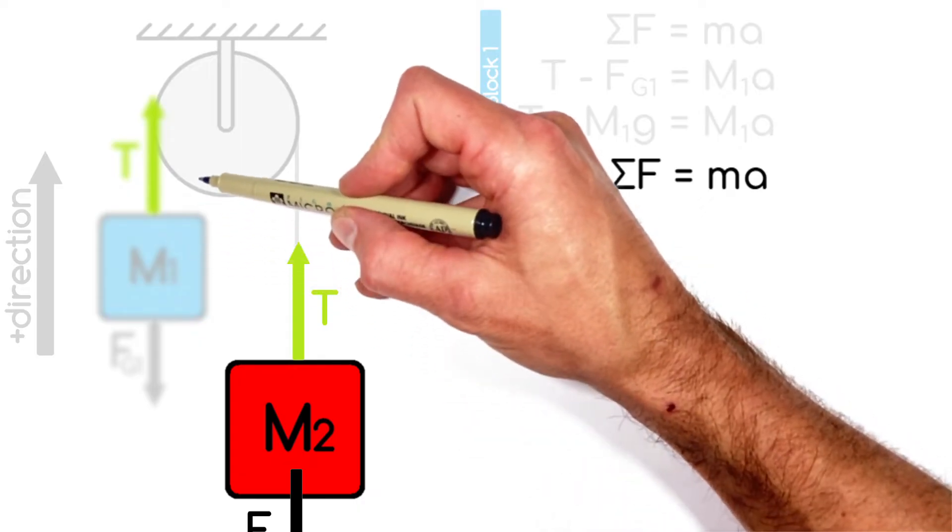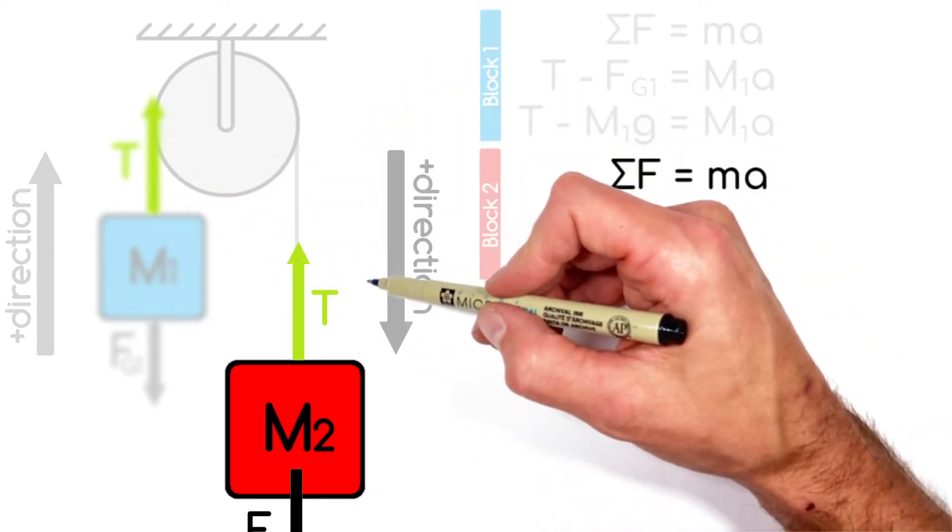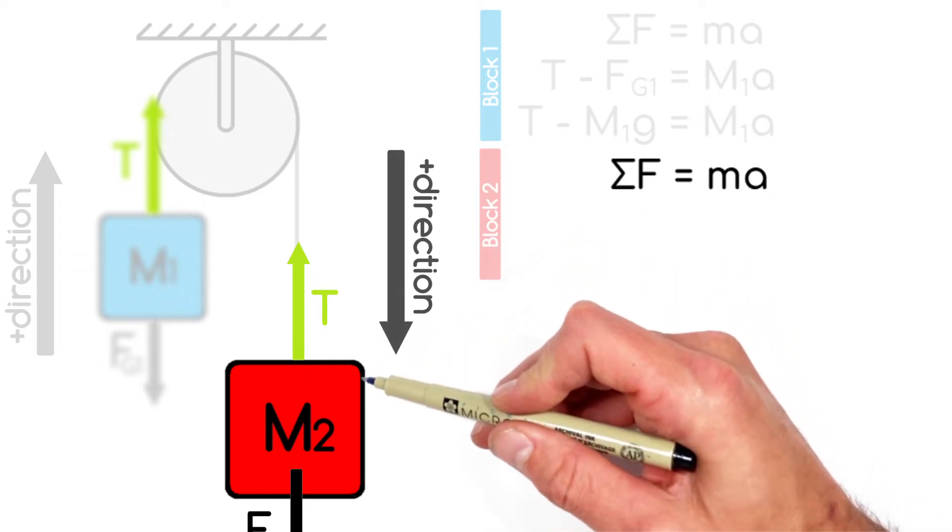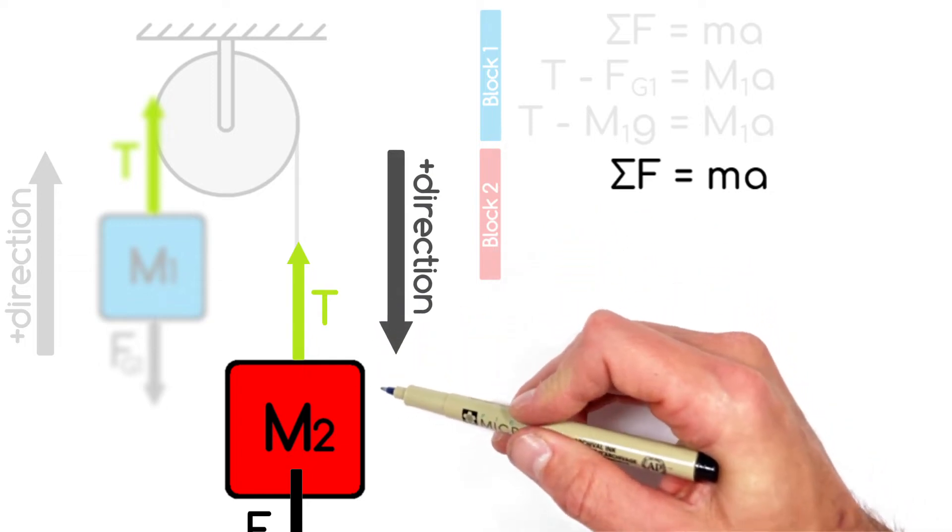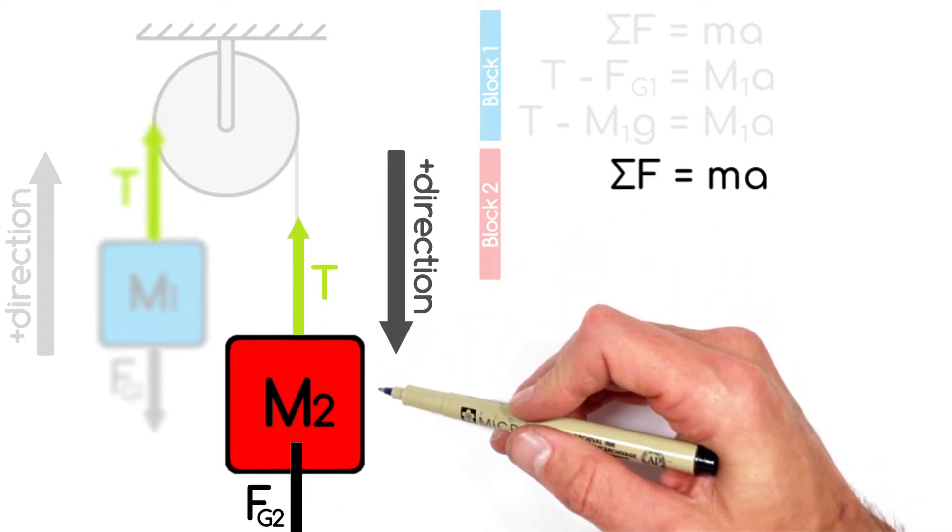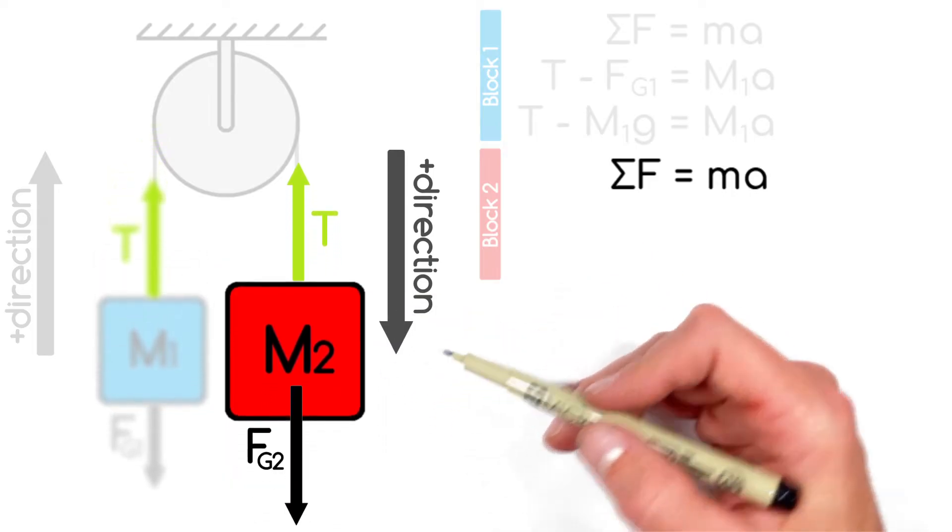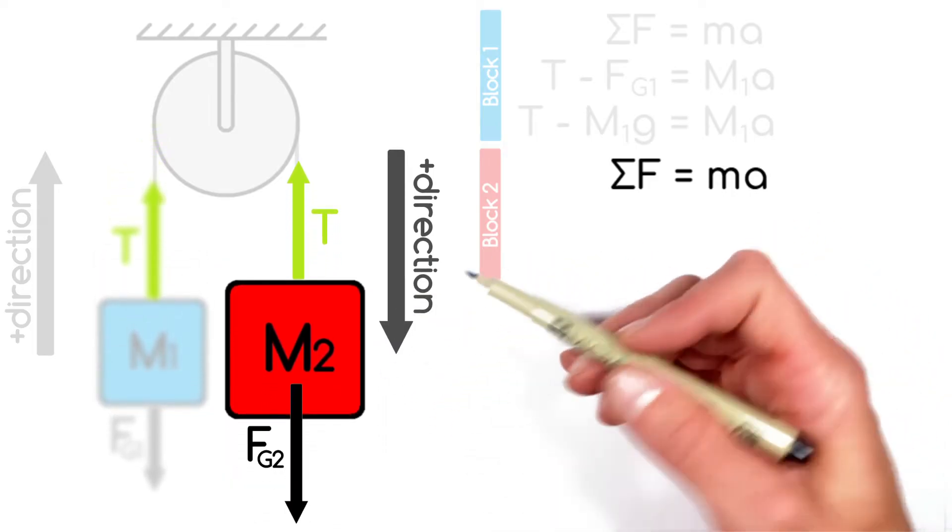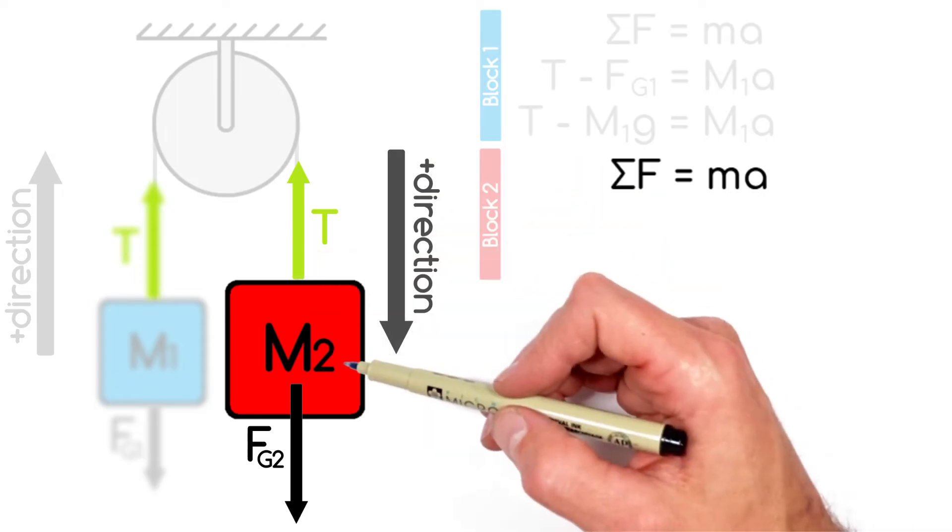And so if we said the upward motion of this block over here is positive, then the downward motion of this block over here is also going to be positive. And that might be counterintuitive to what most people think. Typically you get used to just saying upward is always positive.